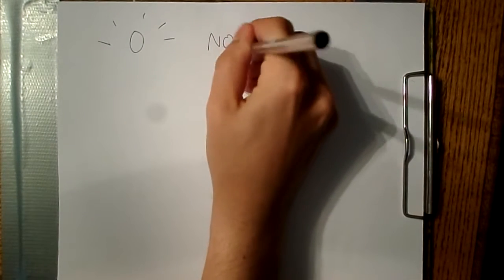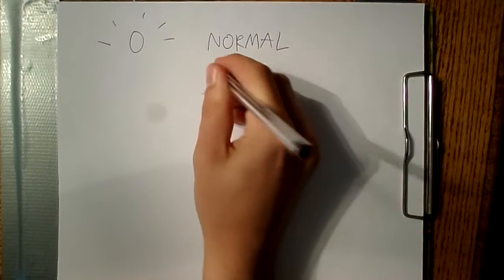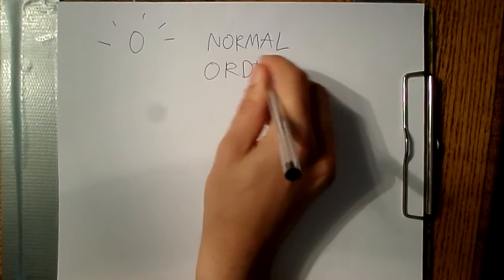Now, writing things out from zero is the standard fare in set theory, and so is using normal order and prime form. Normal order and prime form are just two ways of writing pitch class sets, so let's try it.